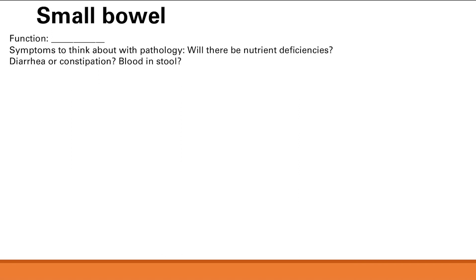When thinking about symptoms associated with small bowel pathology, consider whether there are nutrient deficiencies due to problems with digestion and absorption. Also consider diarrhea or constipation, since stool passes through the small bowel — too much water or malabsorption can lead to diarrhea, while blockage can cause constipation. Finally, consider whether there may be blood in the stool.